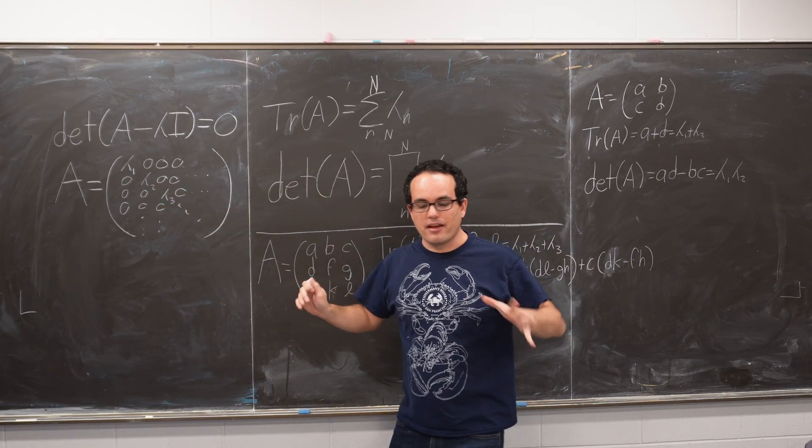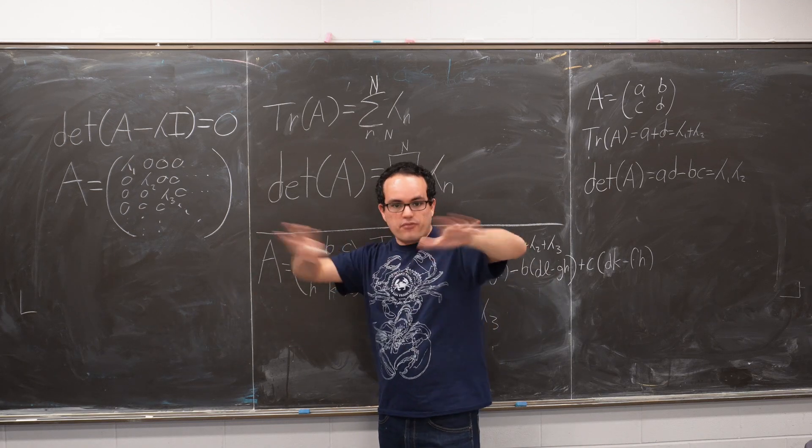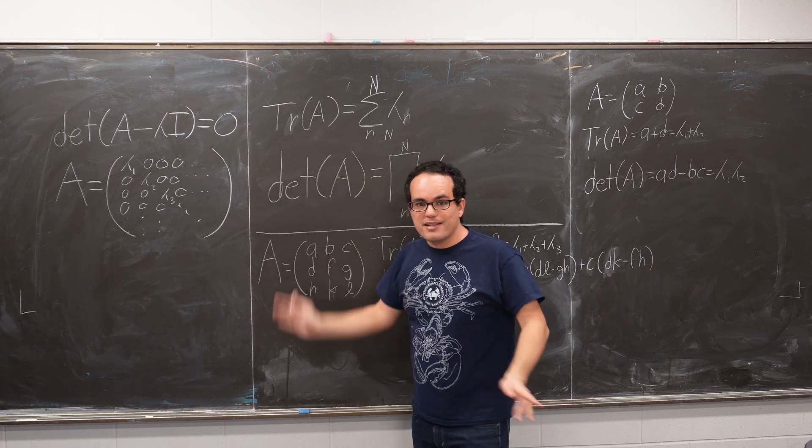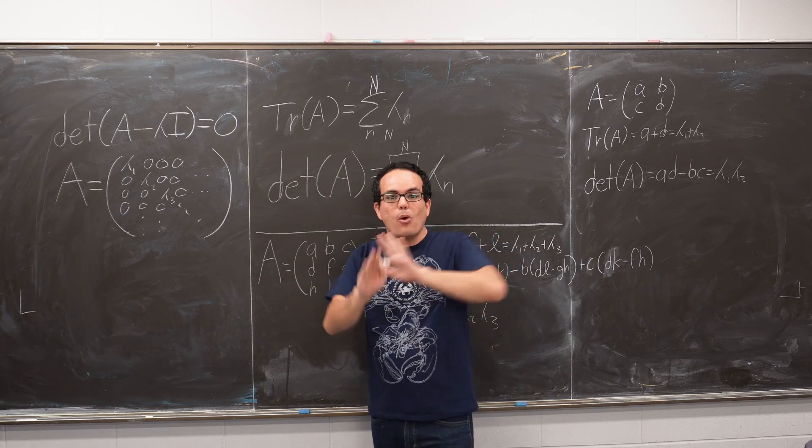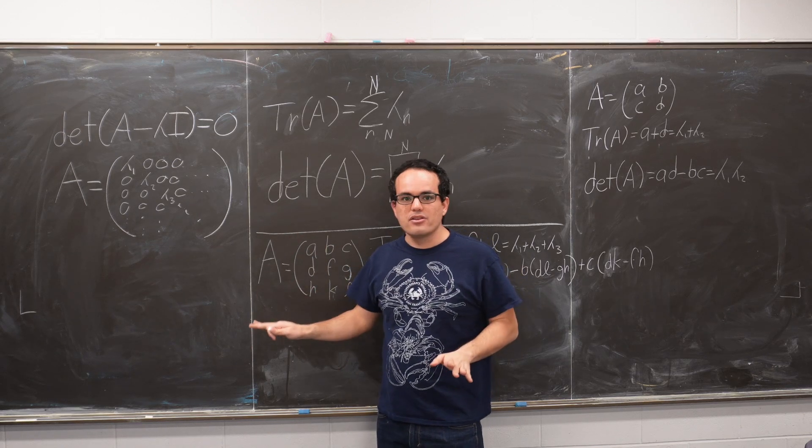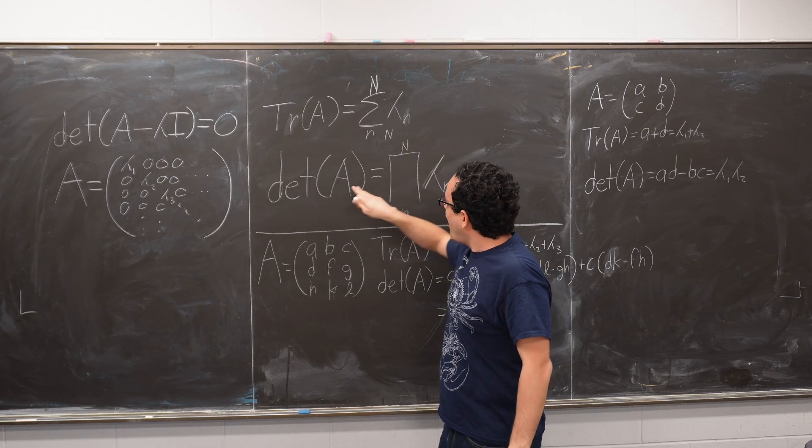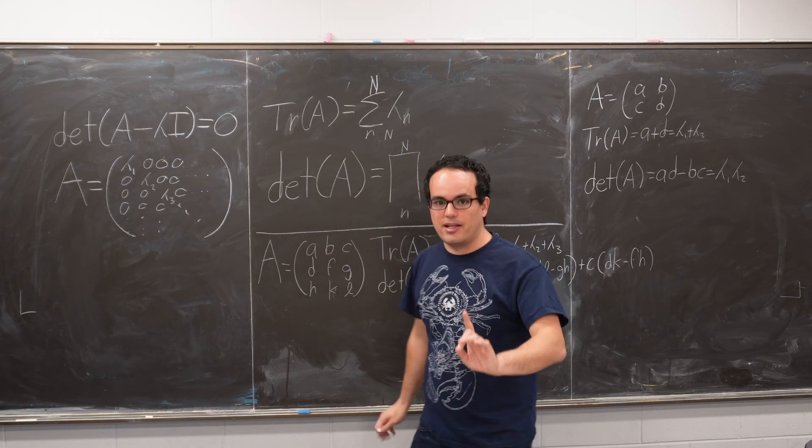But here's the amazing thing. If you write your matrix in another basis using different basis vectors, the trace and the determinant will never change. They will always be the same. So you know that no matter what, the trace is always the sum of the eigenvalues, and the determinant is always the multiplication of the eigenvalues.